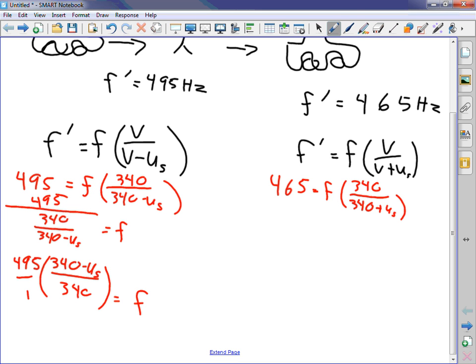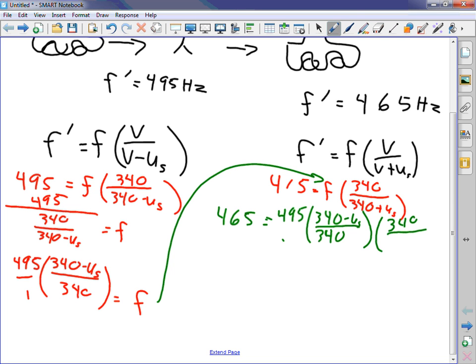I'm going to come over here and I'm going to shove him in. Now I got 465 plugging him in here equals 495 times 340 minus u sub s over 340 times 340 over 340 plus u sub s. And it looks like me not factoring in is going to pay off in trying to simplify down. What cancels?